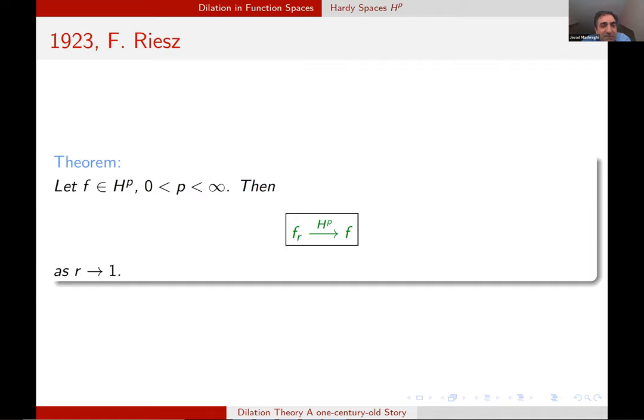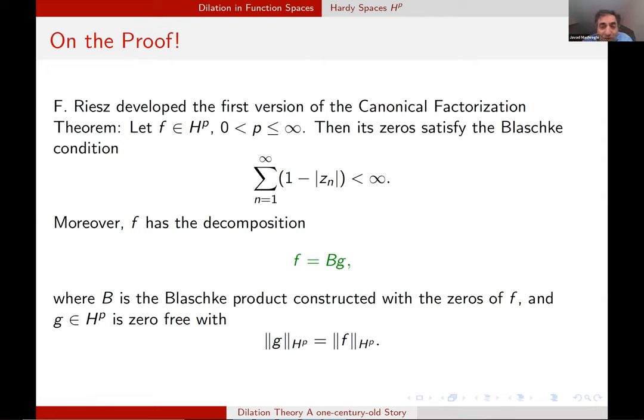And here is our first serious theorem about dilation by Riesz himself. For any F in H^p, F_R converges to F when R goes to one. That's the first dilation theorem. Some words about the proof. There are many interesting things about the approach that Riesz adopted to arrive at this. The first one is that he obtained the first version of the canonical factorization theorem. That's a fundamental theorem in functional spaces. And the version that Riesz obtained was this. He extracted the zeros as a Blaschke product. So we can write F equal to B times G. And more important, the norm of G does not increase. This is equal to the norm of F.